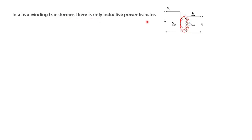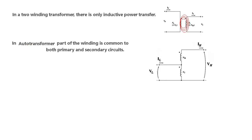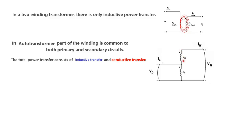In two-winding transformers, power is transferred only inductively — due to magnetic flux linkage from the primary side to the secondary side. But in an auto transformer, part of the winding is common to both primary and secondary. This common winding (C) results in two types of power transfer: inductive transfer, as flux lines link the upper winding, and conductive transfer, because the load is directly connected.